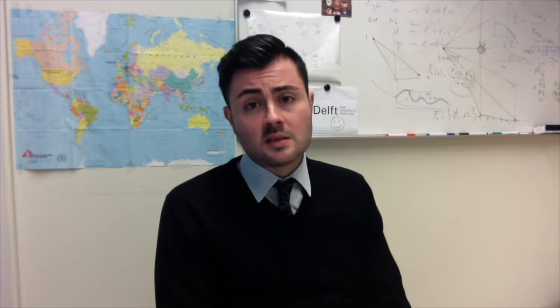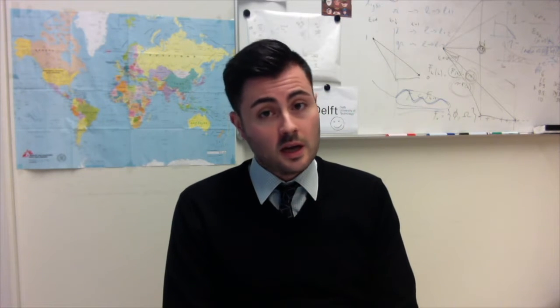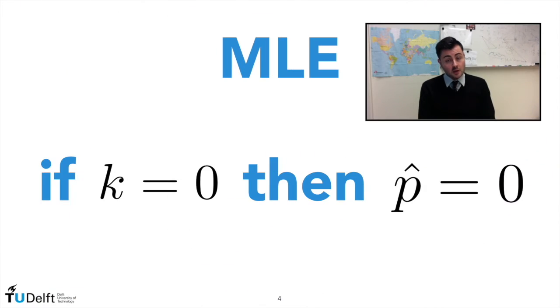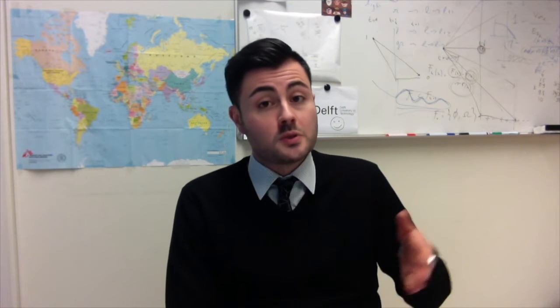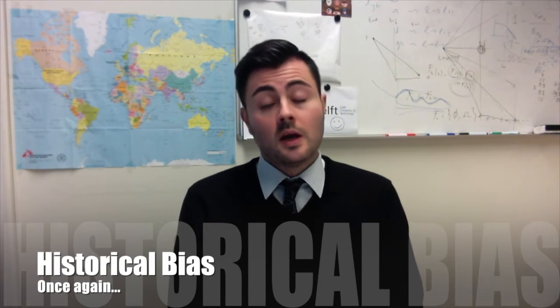The probability mass function of a binomial gives us exactly the probability of observing k defaults over n companies, where p is the probability of default for each single company. Now, what is the issue with the MLE estimator k over n? Consider the case in which k is zero — that is, we have observed no defaults so far. Then it is obvious that p-hat will be zero as well, since p is estimated as k over n, and zero divided by n is zero. This is a problem because the simple estimator tells us that since we have observed no default, the probability of default is actually zero — and we know that can be quite dangerous.